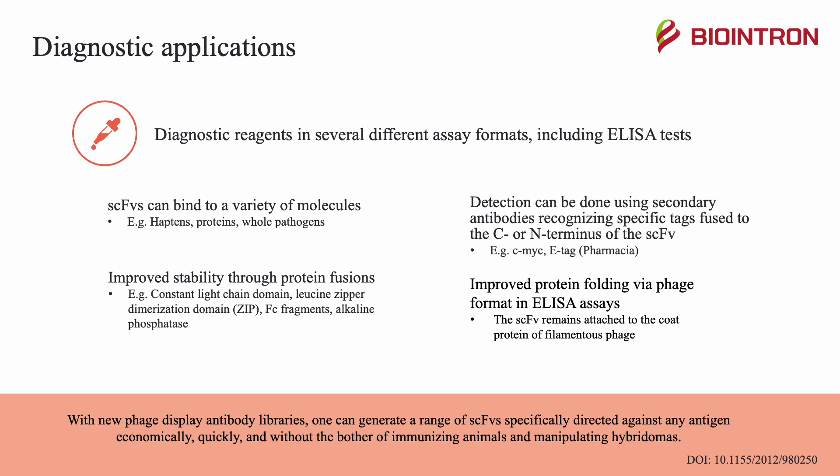Single-chain variable fragments are highly useful in diagnostic applications. They can be used as diagnostic reagents in several assay formats, including ELISA tests. SCFVs can bind to a variety of molecules such as haptens, proteins, or whole pathogens, and detection can be done using secondary antibodies recognizing specific tags fused to the C- or N-terminus of the SCFV. Stability can be improved through protein fusions such as with constant light chain domains, FC fragments, or alkaline phosphatase. With new phage display antibody libraries, one can generate a range of SCFVs specifically directed against any antigen economically and quickly, without immunizing animals or manipulating hybridomas.